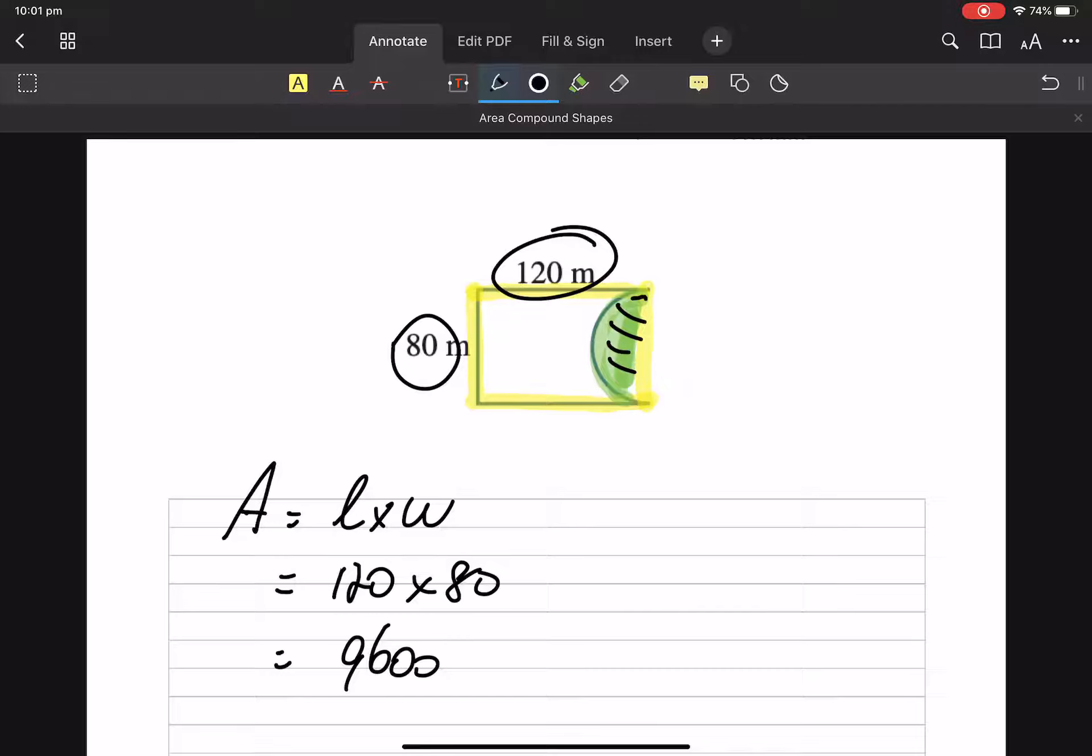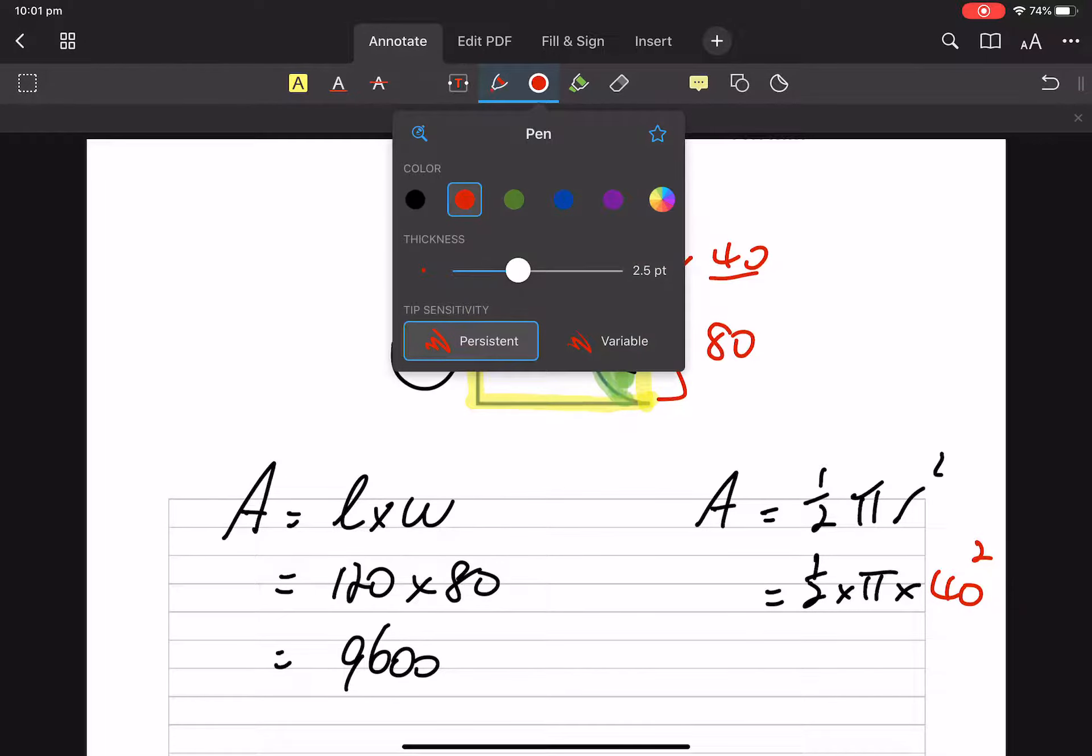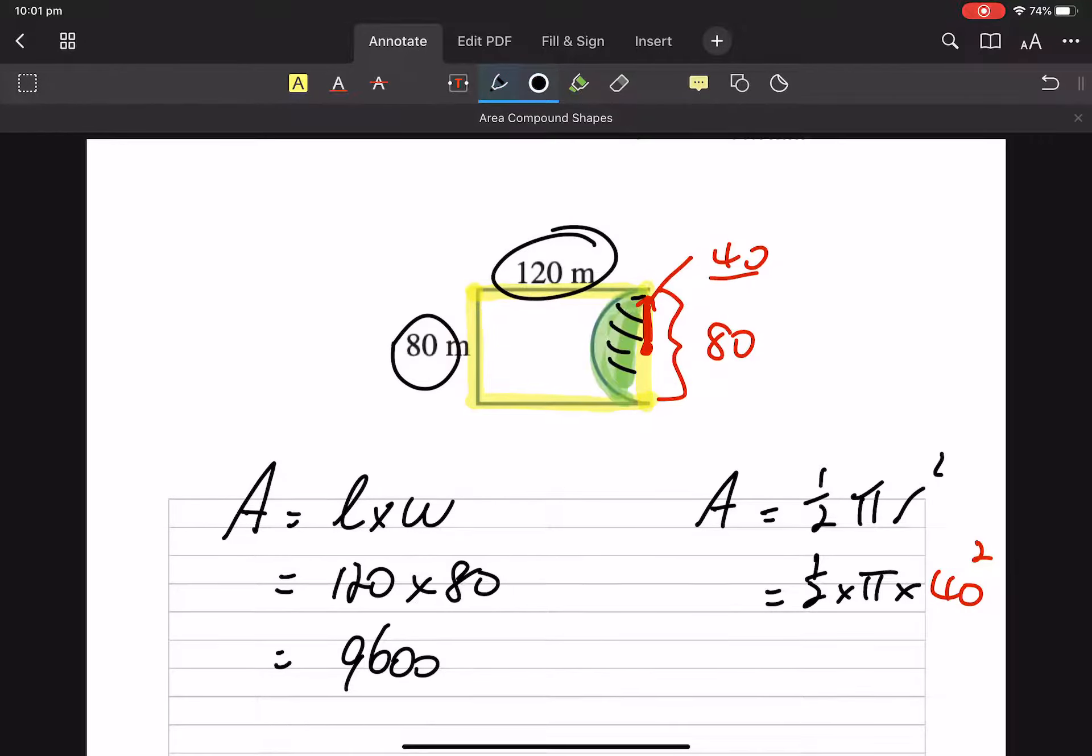So let's calculate what that section there is. Well, that's a half a circle. So the area of a circle is pi r squared, but it's a half a circle. We need to work out what my radius is and let's do that in red because it's hard. So a radius goes from the middle of the circle to the outside. We know that is 80, so the radius must be 40, 40 squared, a half times pi times 40 squared.